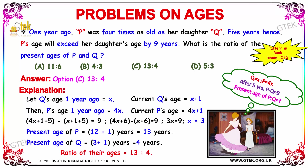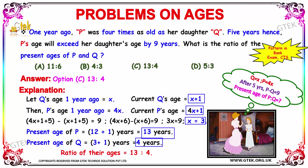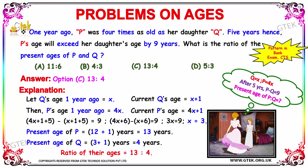So we have got our X value. On substituting X, we get the current age of P and Q. That is, 3 plus 1 is 4 years for Q. And 4X plus 1, substituting 3, you get 12 plus 1, that is equal to 13 years. So the ratio of their ages is nothing but 13 is to 4, which is nothing but option C. Hence, option C will be your answer.